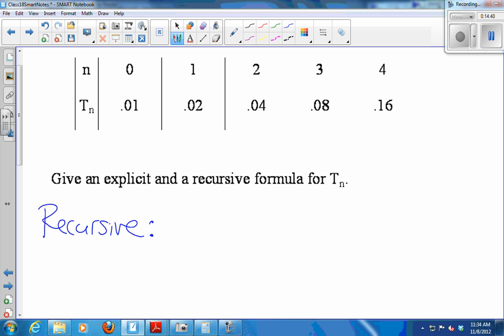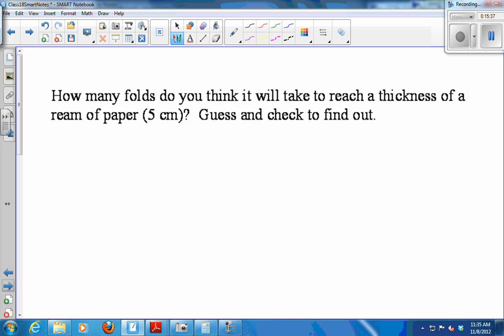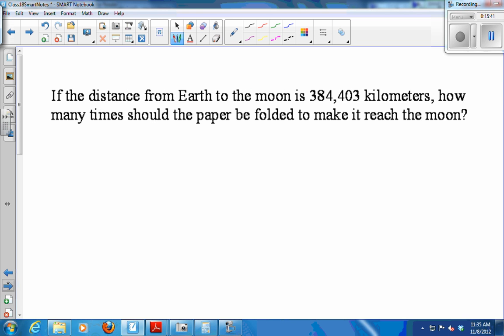All right. So recursive, to get from one number in my T sub n list to the next, I'm doubling, right? So I'm going to say that any given T sub n is the previous T sub n, which we denote with the T sub n minus 1, times 2. And then for explicit, T sub n is going to be, well, I'm going to start with 0.01. I'm going to start with 0.01 before I've done any folding. And then I double it a certain number of times. So I'm going to do times 2 to the n, because I'm going to multiply by 2 n times. So we have a recursive and an explicit formula. Now discuss in your groups. Go through the rest of these questions here. Up through the moon one.